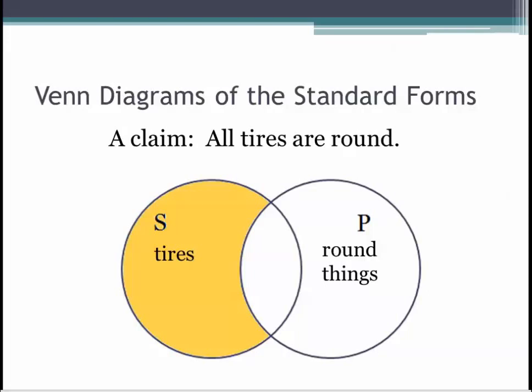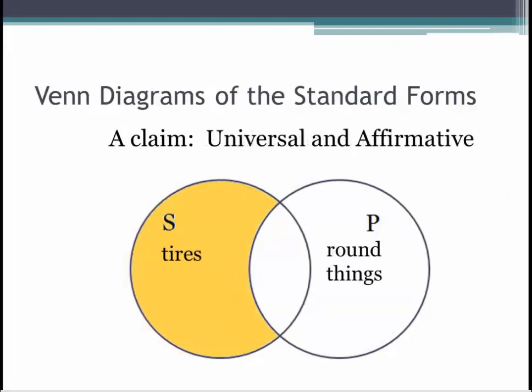In Venn diagrams, we fill in the part of the circle where there are no members of the category. In this case, there are no tires that aren't also part of the category of round things, so we fill in the left side of the subject circle. The A claim is universal and affirmative. This proposition is saying something about a characteristic that all tires have — namely, they are all round — making it a universal and affirmative claim.